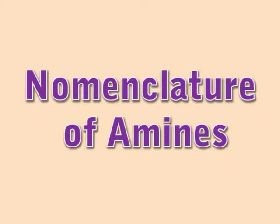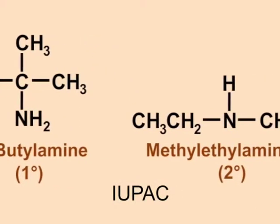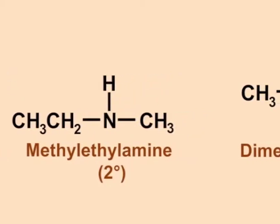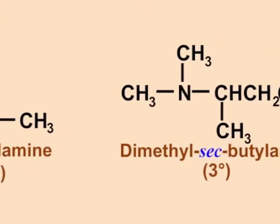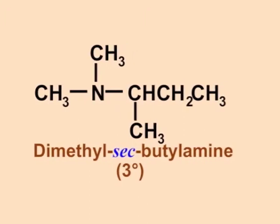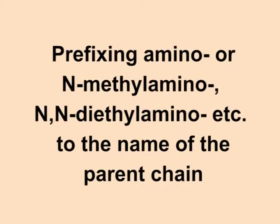Let us begin with the nomenclature of amines and first learn about the IUPAC naming of amines. Aliphatic amines are named by naming the alkyl group or groups attached to nitrogen, followed by the word amine. More complicated ones are often named by prefixing amino, N-methyl amino, N,N-diethyl amino, etc., to the name of the parent chain.